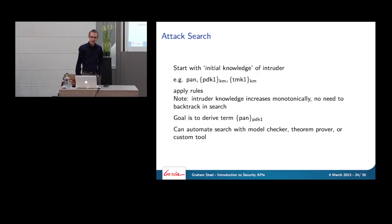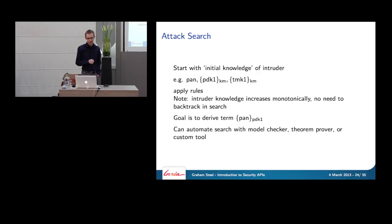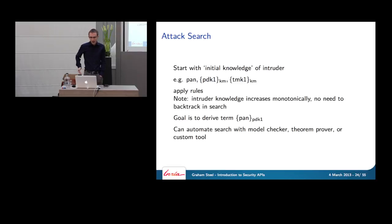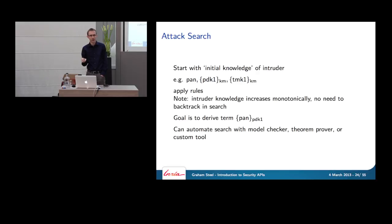We can write one of these formulae for each rule in the API, with a precise semantics in terms of a transition system. To find the attack, we give the intruder the terms he'd obtain by compromising the host machine: the customer's PAN, PDK encrypted under KM, and TMK encrypted under KM — but not KM or KM2 themselves. Then we exhaustively apply the rules and see if any chaining derives PAN encrypted under PDK, which corresponds to the customer's PIN.